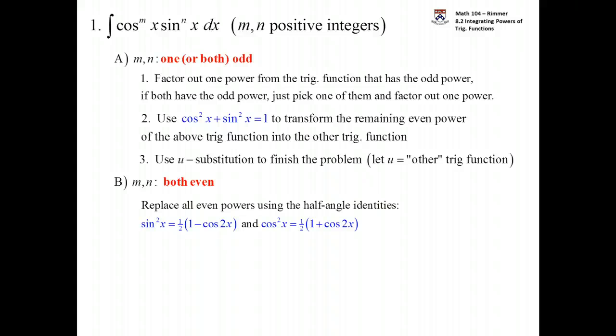Sine squared is one half times the quantity of one minus the cosine of twice x. Cosine squared is one half of one plus the cosine of twice x. So we replace all the even powers and then, you know, just work it out. Multiply everything out and see what happens.